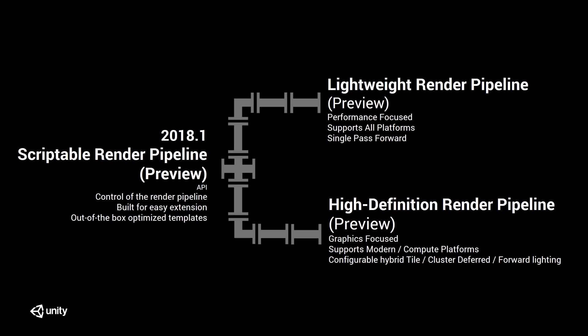In 2018.1, we introduced a system called the Scriptable Render Pipeline. And as the name implies, it's a set of C# APIs that allow you to script your rendering pipeline. For the majority of use cases, we provide two ready-made pipelines called the Lightweight and the High Definition. These pipelines allow you to customize what you require for the graphics in Unity. They can be used without coding knowledge — which for an artist like me is great — but with coding knowledge, they become fully scriptable and fully customizable.